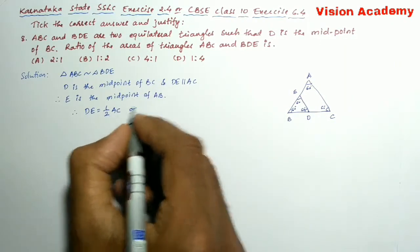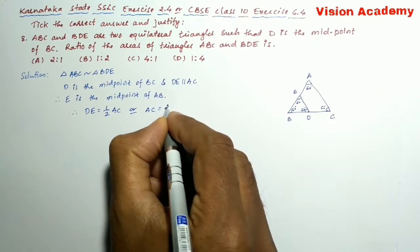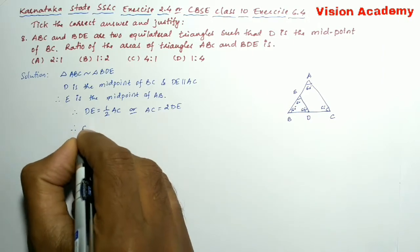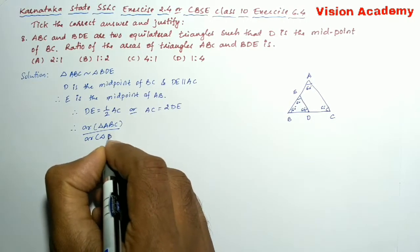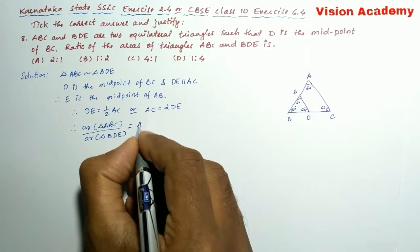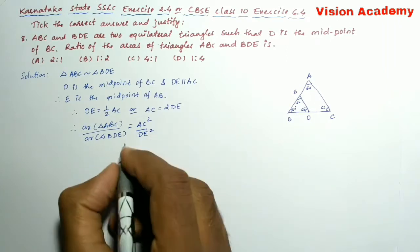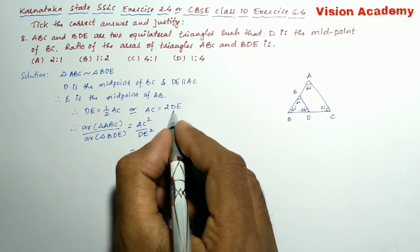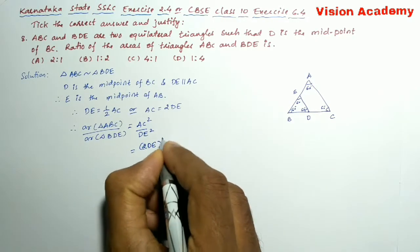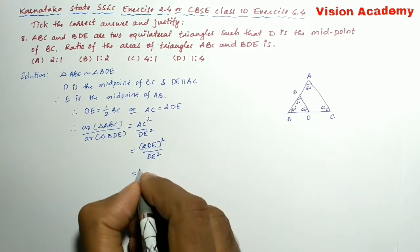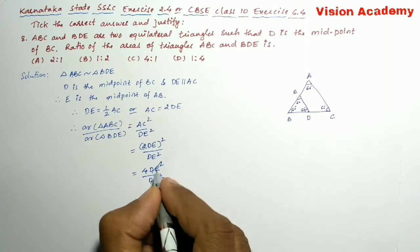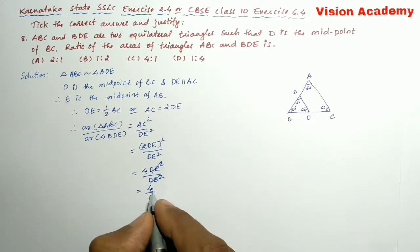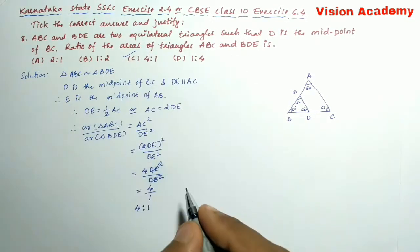Or we can also write AC is 2 times DE. Therefore area of triangle ABC divided by area of triangle BDE is equal to AC square divided by DE square, which equals 2DE whole square divided by DE square. This simplifies to 4DE square divided by DE square, so this DE square will get cancelled, we remain with 4 by 1. So this can also be written as 4 is to 1. Here option C is the correct answer.